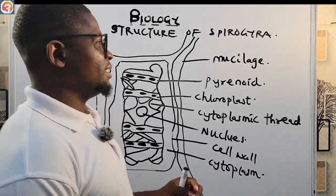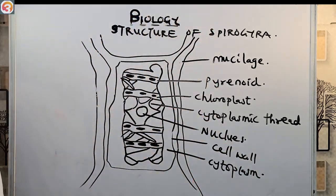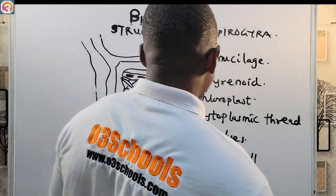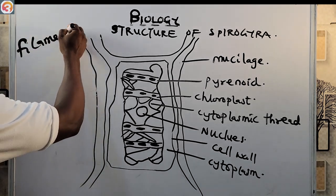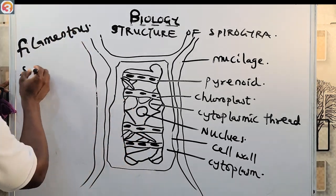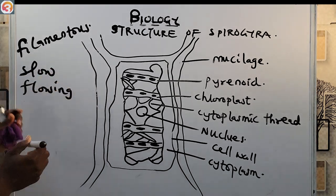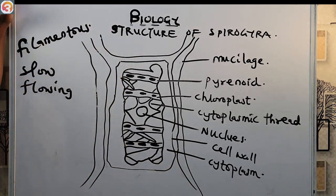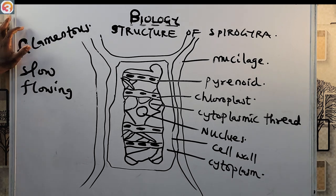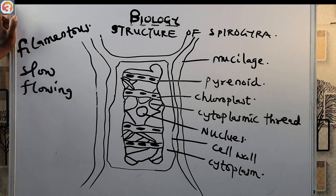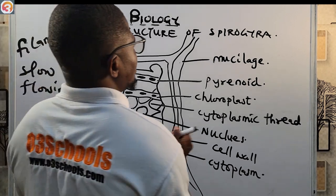Spirogyra is a common filamentous algae that is found in slow-flowing freshwater streams. It is cylindrical in shape. It has a cell wall that is surrounded by a layer of mucilage.